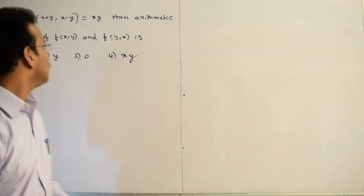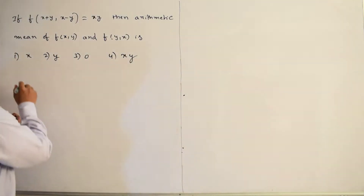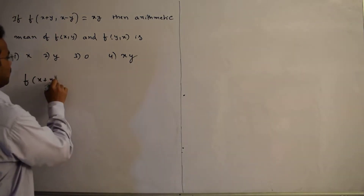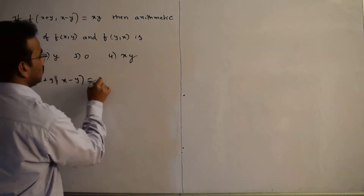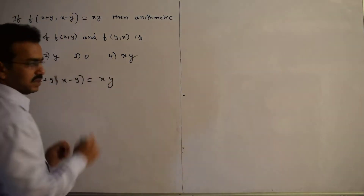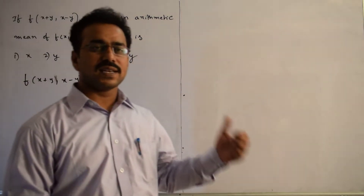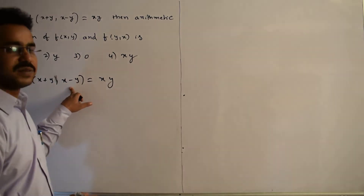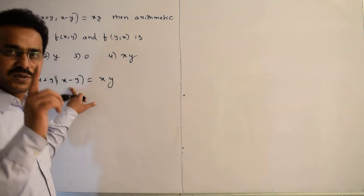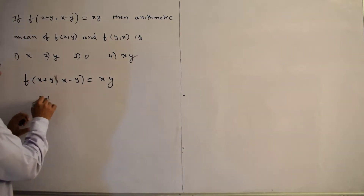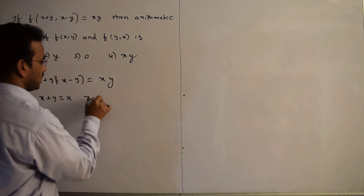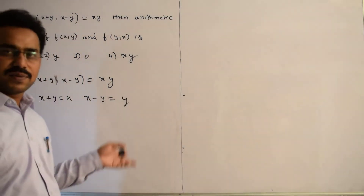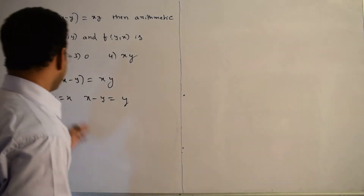The given function is f(x+y, x-y) = xy, but we require f(x,y). Here x is replaced by x+y and x-y is replaced by y. So I am going to substitute x+y equal to x and x-y equals to y.